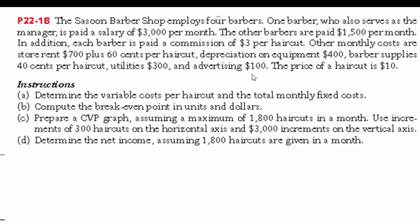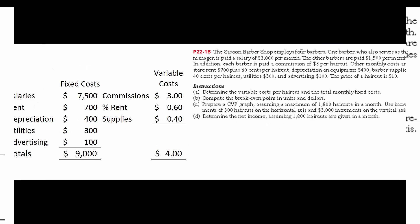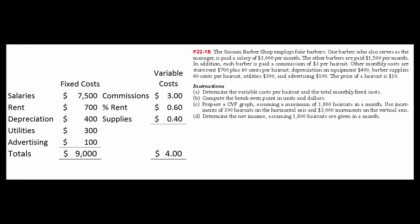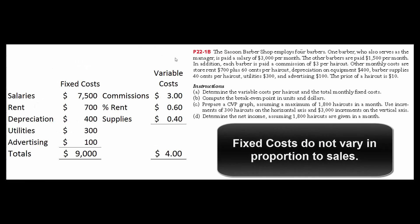So which of those do you think are fixed and which are variable? The fixed costs are the salaries, the rent on the store, the depreciation, utilities, and advertising — for total fixed costs of $9,000.